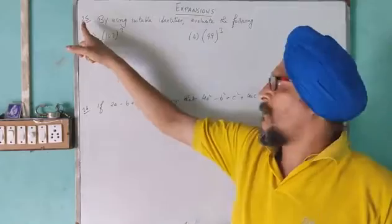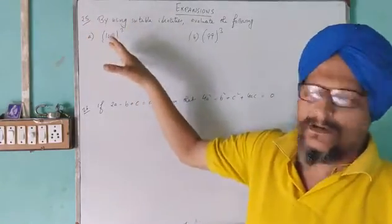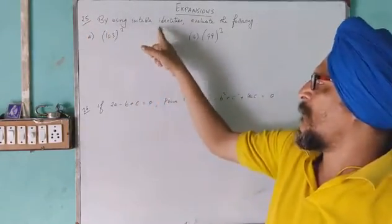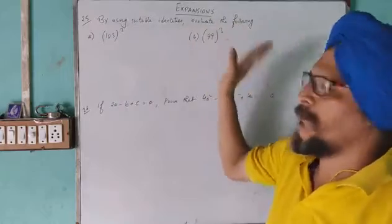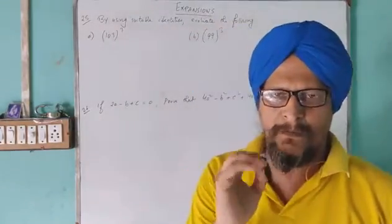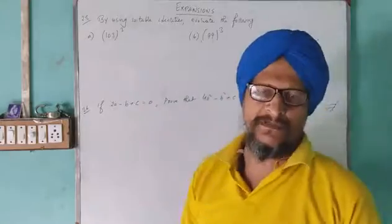Now in this question, question 425, what is written on the whiteboard, see here. Using suitable identity, you have to evaluate the following, so you have to apply this formula.